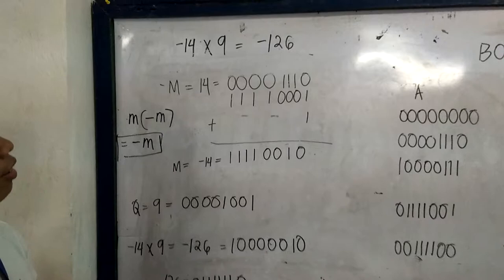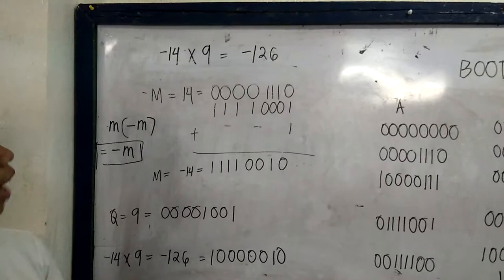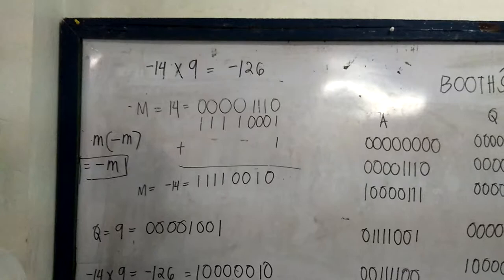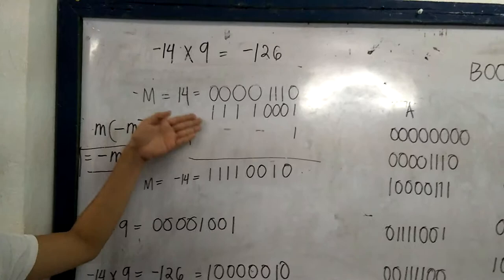In order to do Booth's algorithm, we must get the binary equivalent of negative 14, 9, and negative 126. First, negative 14. In order to get negative 14's binary equivalent, we must first get the positive value of 14.